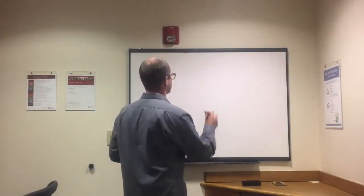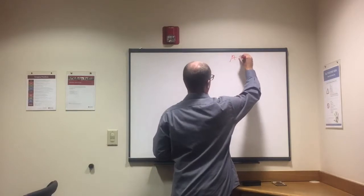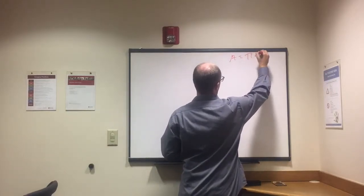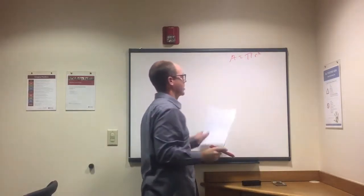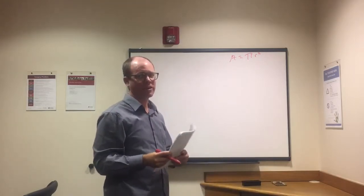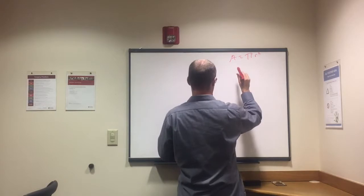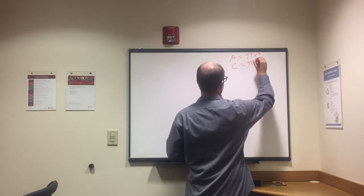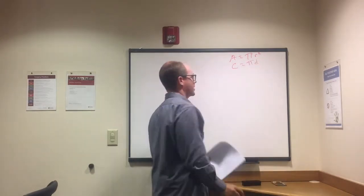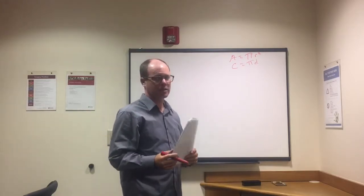Let's take a look at some circles. We've got a couple of formulas: area equals pi r squared, and circumference equals pi times diameter.